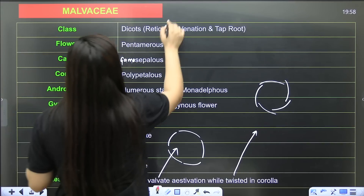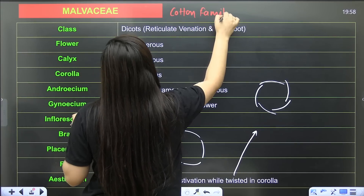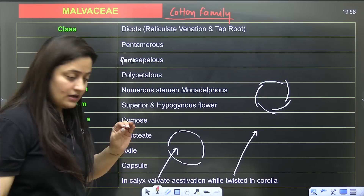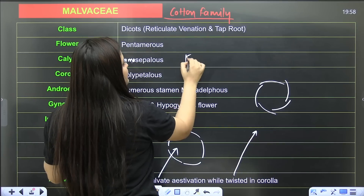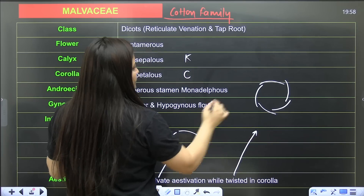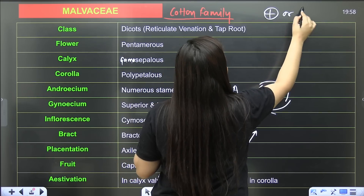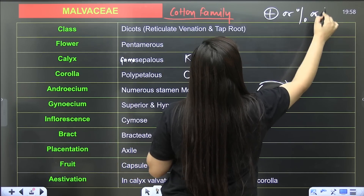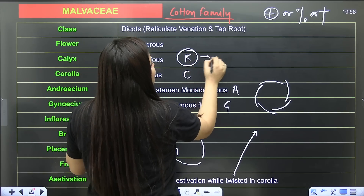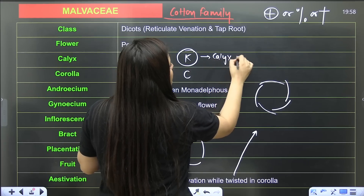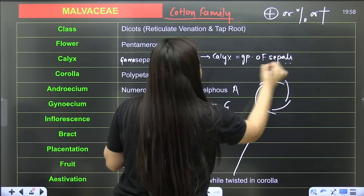Let's start with the first family: Malvaceae, that is the cotton family. Cotton and China rose belong to this family. Before starting, let me explain a few symbols you'll encounter in floral formulas, like K, C, A, G. K means calyx — basically the group of sepals. Sepals and petals are the non-essential, accessory whorls.